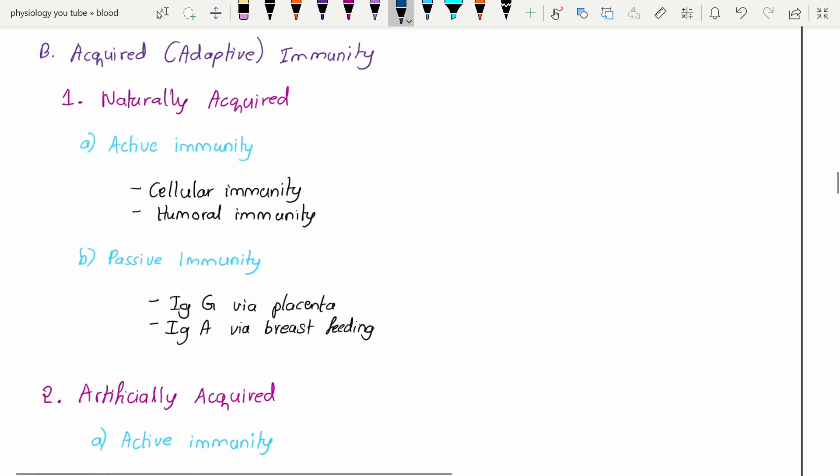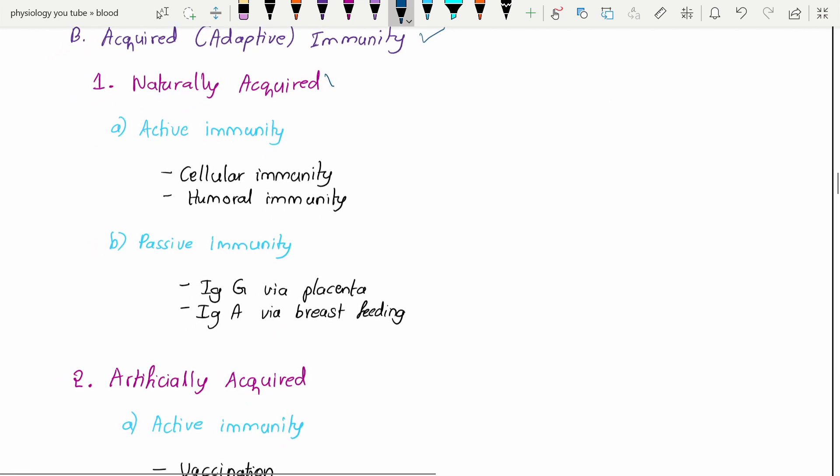Next we will move to acquired or adaptive type of immunity. As the word says, adaptive - as we grow we will acquire different types of infection. As we acquire different types of infection, our body immune system learns to defend them. This is acquired immunity. Again we have naturally acquired and artificially acquired type of immunity.